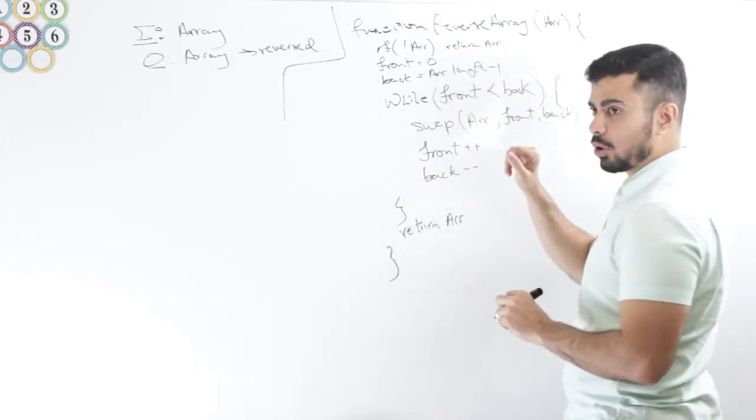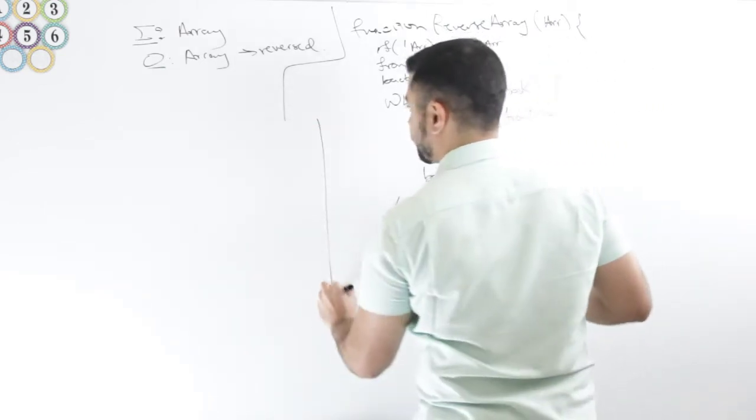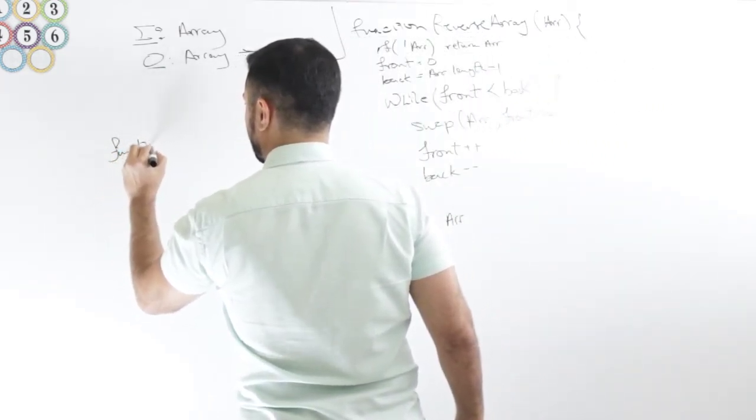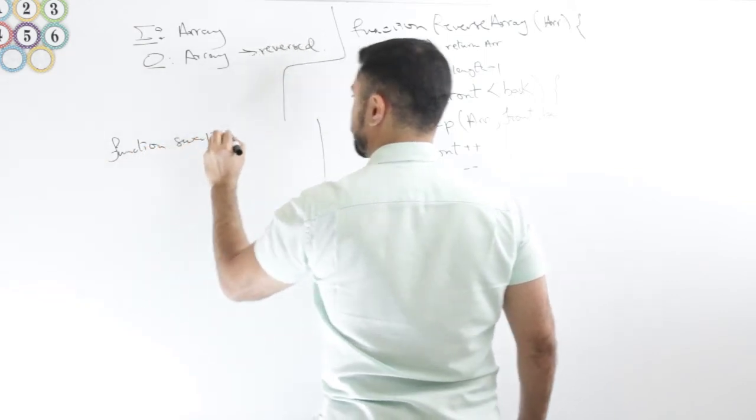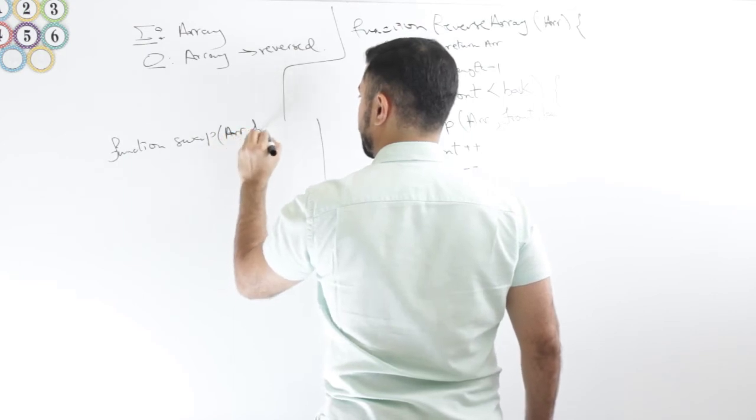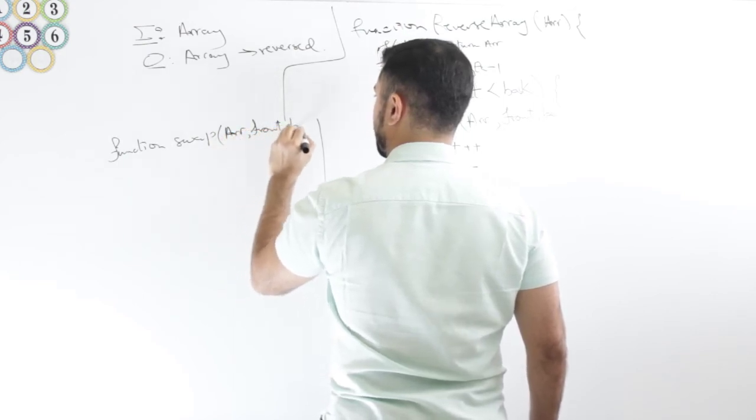Now let me implement the swap function. Function swap, it takes an array, front and back.